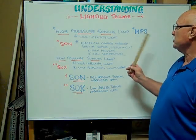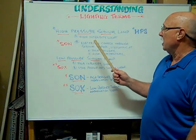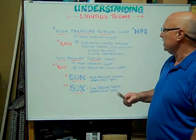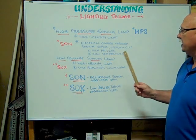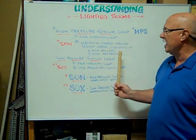The high-pressure sodium lamp is a high-intensity light that's electrically charged through sodium vapor and operates at high pressure and high temperature.